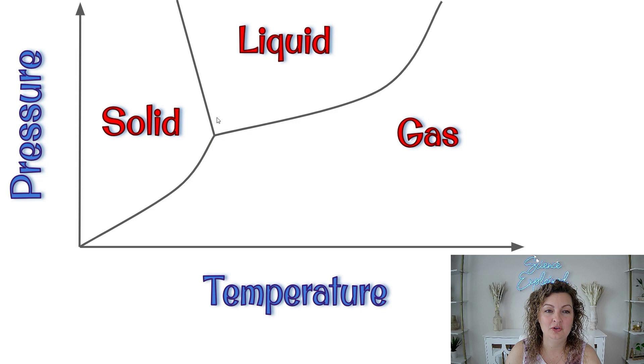You can see that our pressure is on the y-axis and our temperature is on the x-axis. We're going to have three lines and they're all going to come together at one central point.